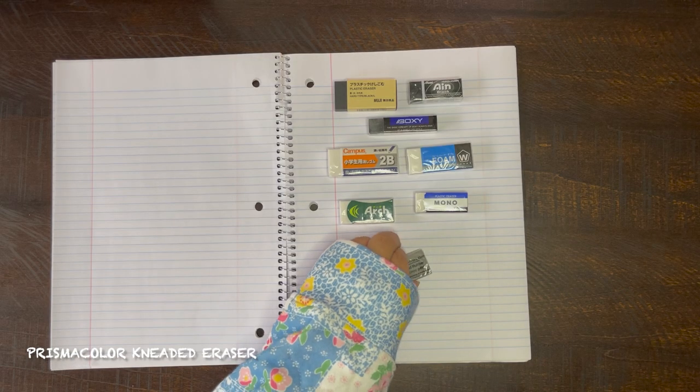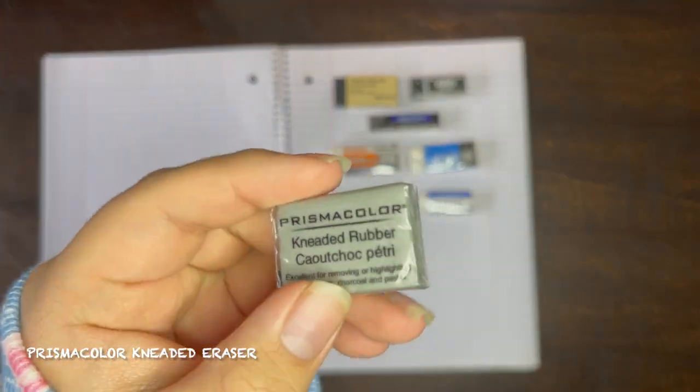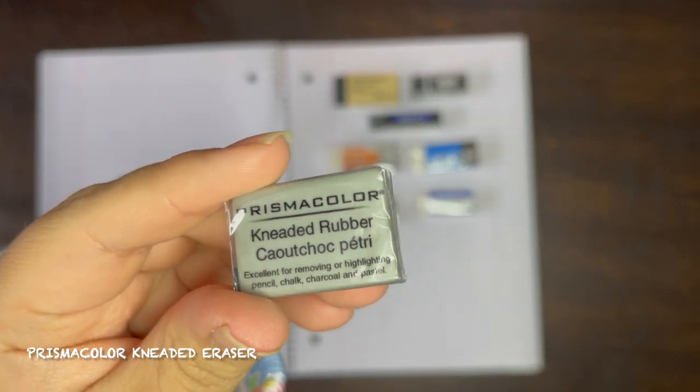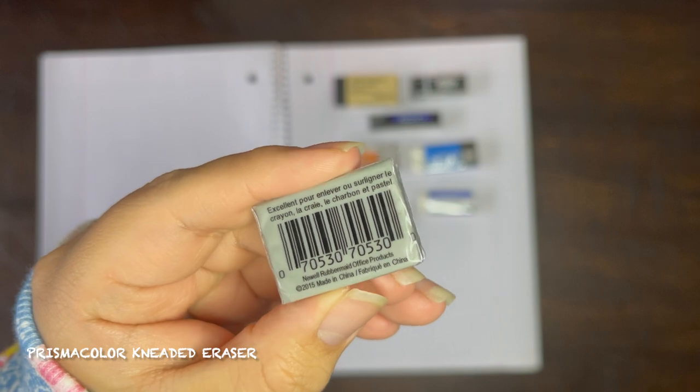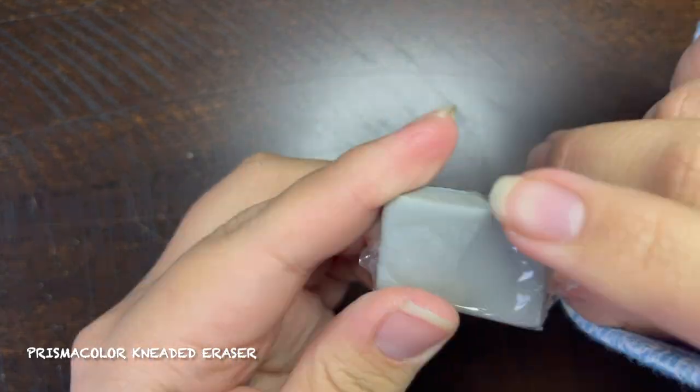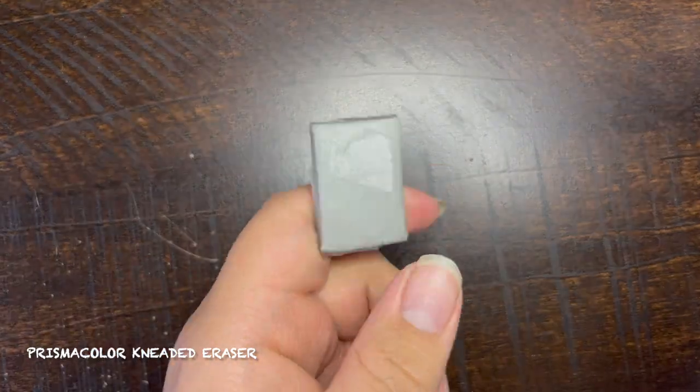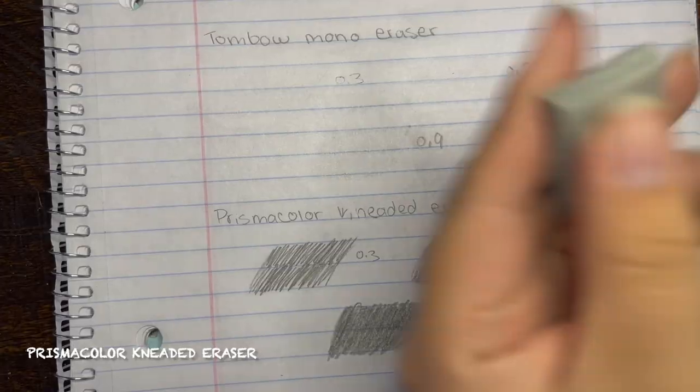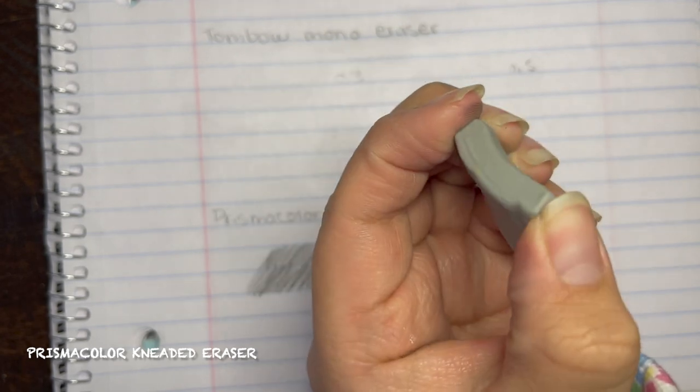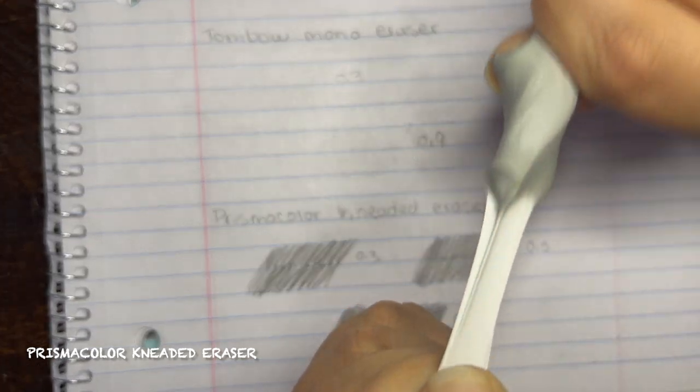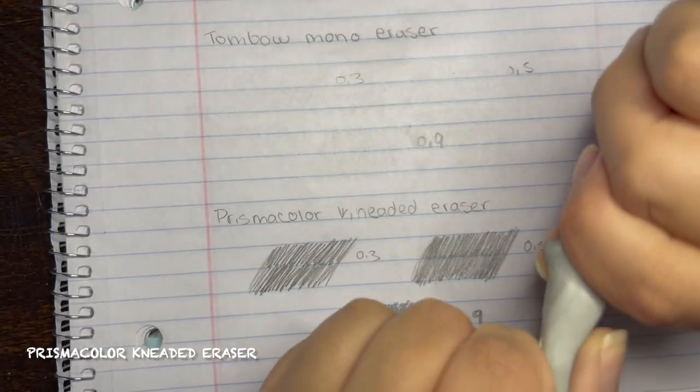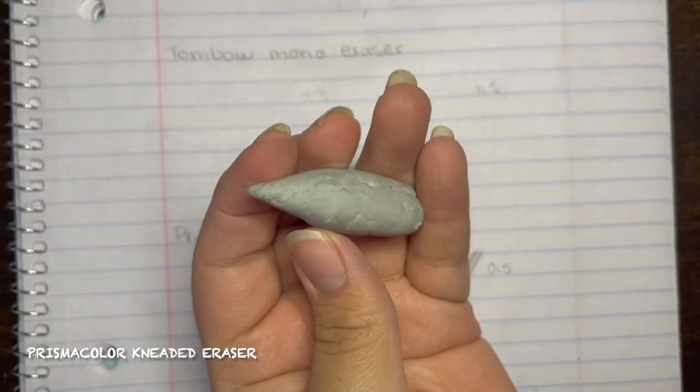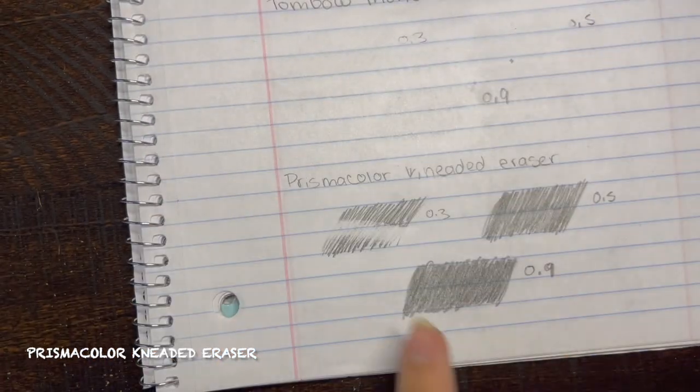Next up we have this Prismacolor kneaded eraser. This one is actually an art eraser. It's not really meant for note taking or something like that. It was kind of hard to open because it isn't a solid rubber eraser. This one is kind of like I would say a mix of clay and slime maybe, but it is a lot harder to knead than I remember it to be. This one I was going to put up for the test because it came with the samples, but I remembered that this one doesn't actually erase. It's more to pick up lead. So when artists need to lighten up a spot that they shaded in too dark, that is supposed to help pick up any lead that wasn't supposed to be there in the first place. This really won't count because it doesn't erase, it more picks up lead.